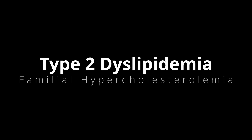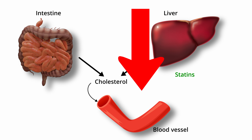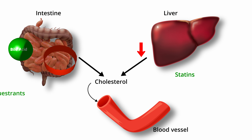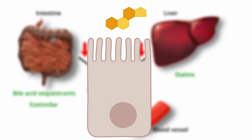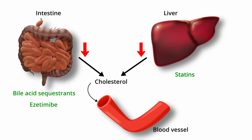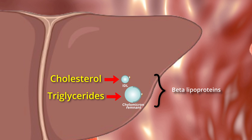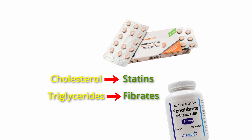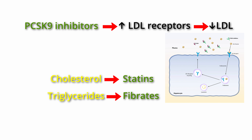In type 2 dyslipidemia (familial hypercholesterolemia), cholesterol is the main issue, which is controlled by statins decreasing hepatic production of cholesterol, bile acid sequestrants binding to bile acids, and ezetimibe preventing cholesterol absorption at the small intestine brush border. In type 3 dyslipidemia (dysbetalipoproteinemia), where both cholesterol and triglycerides are increased, statins with fibrates are the mainstay of therapy. PCSK9 inhibitors could be helpful in patients who are resistant to statin or fibrate therapy.